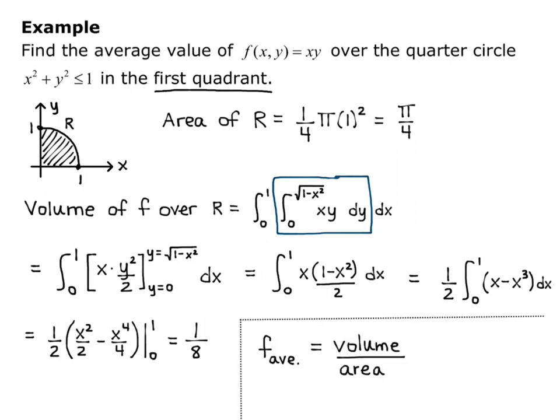Now the average value of f, f average, equals volume divided by area. So I'm going to do one eighth divided by pi over 4. Dividing by a fraction is the same as multiplying by the reciprocal, so this is one eighth times 4 over pi, which simplifies to 1 over 2 pi. So we've established that the average value of the function z equals xy over the quarter circle x squared plus y squared less than or equal to 1 in the first quadrant is 1 over 2 pi. In other words, that's the average height of my function f.